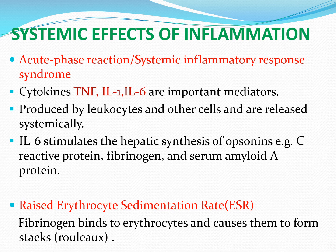A raised erythrocyte sedimentation rate (ESR) is often seen in chronic inflammatory diseases. Excessive production of fibrinogen binds to erythrocytes, making them heavier and causing them to settle faster in the ESR tube — a phenomenon called rouleaux formation. Normally we measure how much red blood cells settle in the first hour, but in chronic inflammatory disease fibrinogen binding leads to an excessive number of RBCs settling at the bottom of the tube, raising the ESR.